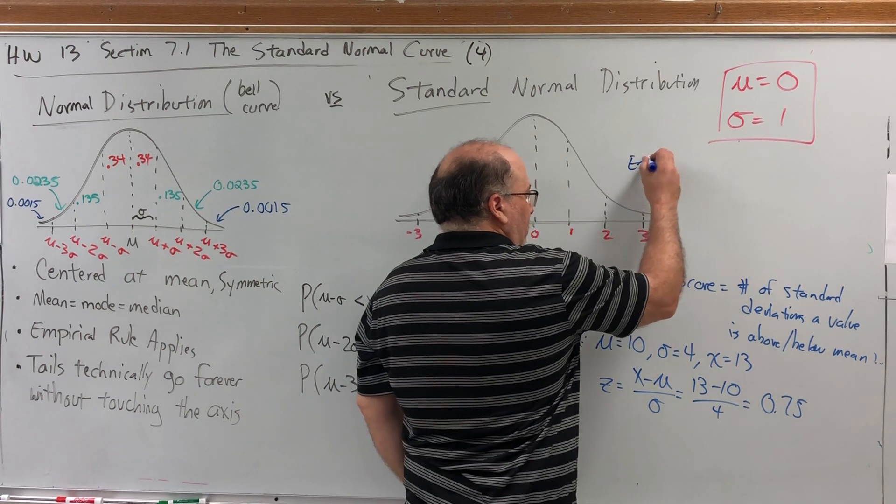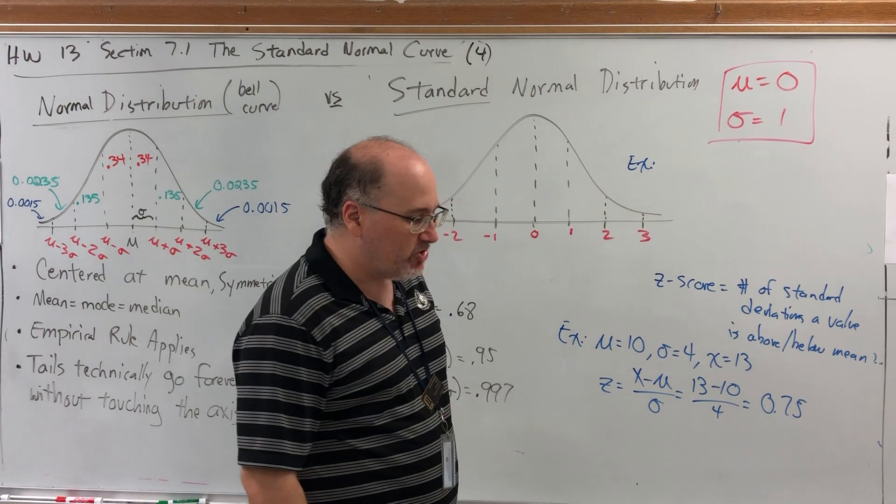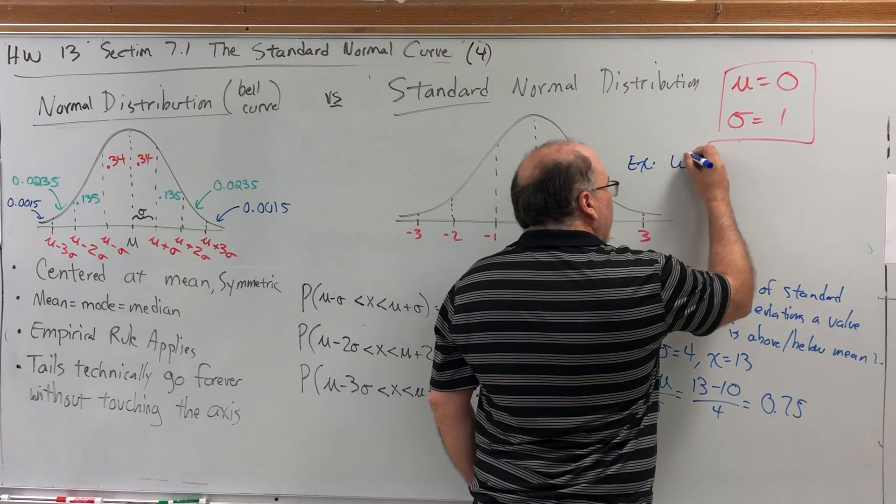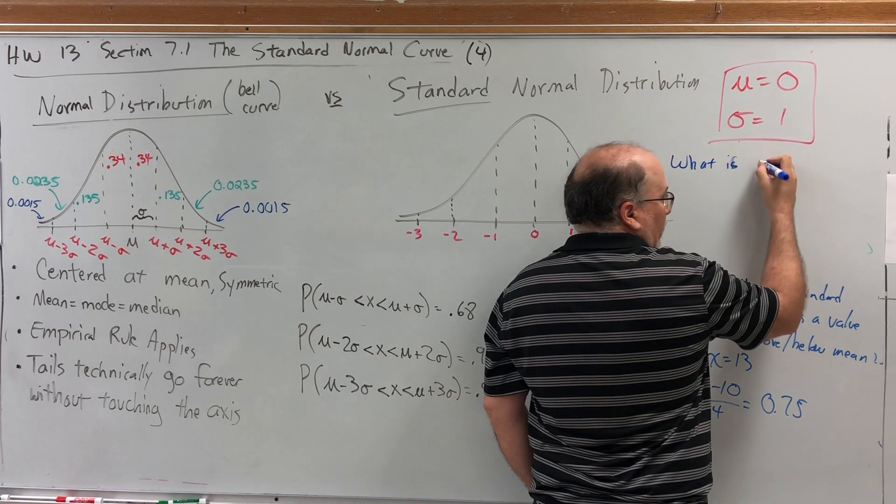So, for example, now let's go back to this setting where mu is 0 and sigma is 1. What is the z-score for x equals 2?